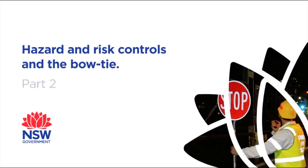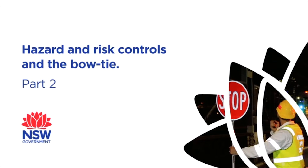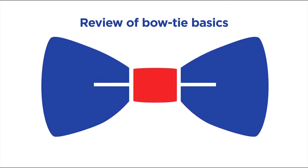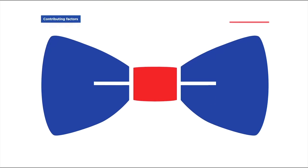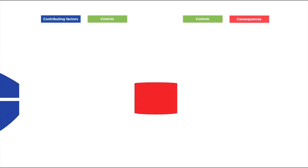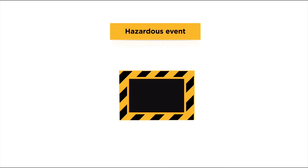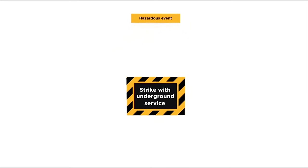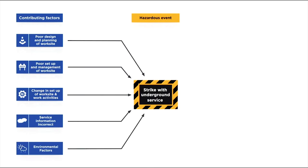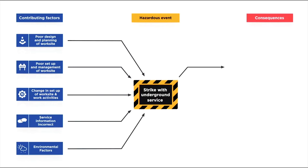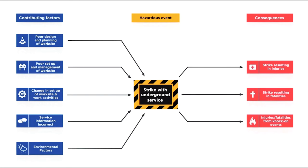In this second bowtie animation we look at controls, a crucial part of the bowtie. A bowtie offers insight into the contributing factors, consequences and risk controls of a specific hazardous event. The hazardous event is the point at which control of a hazard is lost. On the left hand side of the bowtie we identify the factors that may contribute to a hazardous event. On the right hand side we show the potential consequences of the hazardous event.